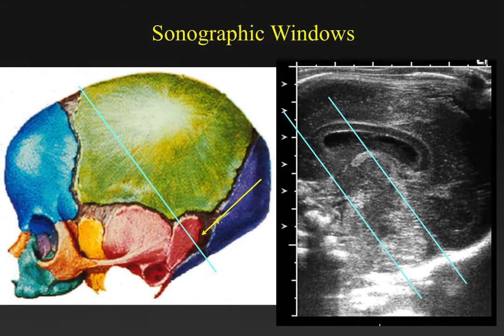The workhorse for us is the mastoid fontanelle, which we have included in our standard sonography on all but very few cases at our institution. The mastoid fontanelle is located at the junction of the parietal, temporal, and occipital bones. The external landmarks are one centimeter behind the tragus of the ear and between one-half and one centimeter superior to that line. The transducer is placed behind the ear in this location and oriented in an exaggerated orbitomeatal line, as shown by the blue line on the skull.